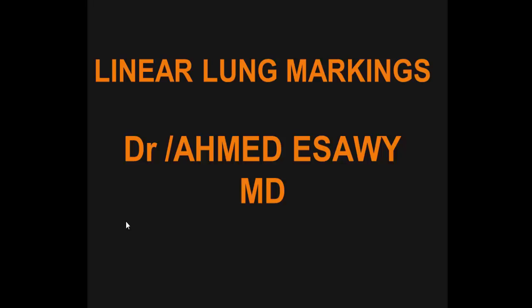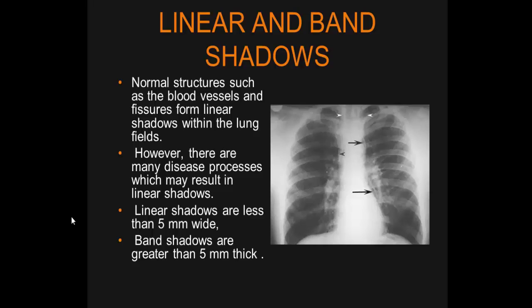Linear and band shadows: normal structures such as blood vessels and fissures form linear shadows within the lung field. However, there are many disease processes which may result in linear shadows. Linear shadows are less than five millimeters, while band shadows are greater than five millimeters thick.